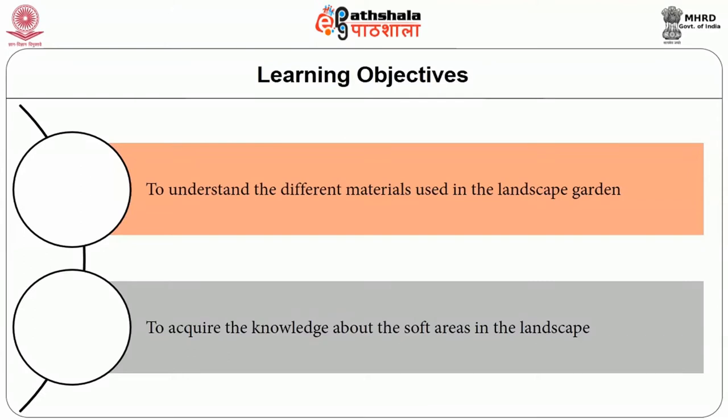Different materials and forms of construction have developed in different parts of the world as a result of climatic difference. The knowledge of different types of materials and their properties is an important tool in the hands of builders in achieving economy in material cost. In this module we discuss the materials and soft areas of landscape. The objectives are: first, to understand the different materials used in the landscape garden; and second, to acquire knowledge about the soft areas in the landscape.